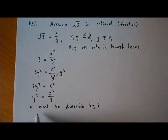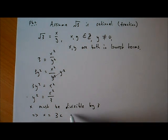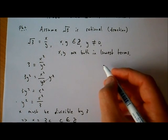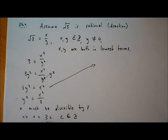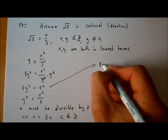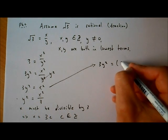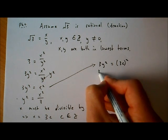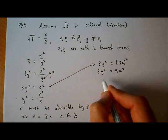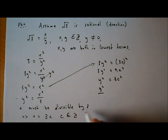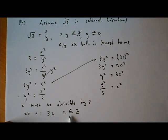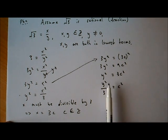Since x is divisible by 3, we can write x equals 3c, where c is an integer. Now going back to the equation 3y squared equals x squared, we substitute x with 3c: 3y squared equals (3c) squared, which gives 3y squared equals 9c squared. Rearranging, y squared equals 3c squared, or c squared equals y squared over 3. Again, this has the same form — so y squared must be divisible by 3, which means y must be divisible by 3.